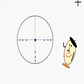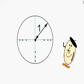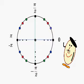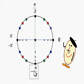First, the trigonometric circle is a circle with a radius of 1. Then you find the black angles: 0, pi over 2, pi, negative pi, and negative pi over 2.